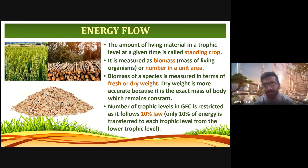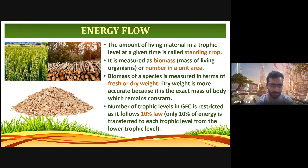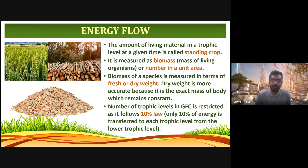The amount of living material in a trophic level at a given time is called the standing crop. It is the amount of living material at a trophic level at a given time. The magnitude of that living material is called the standing crop. It is measured as biomass — the mass of living organisms or their number in a unit area.